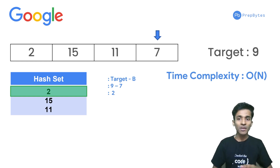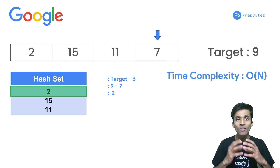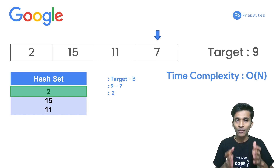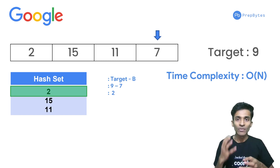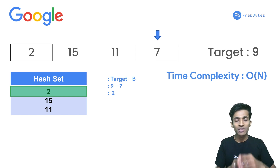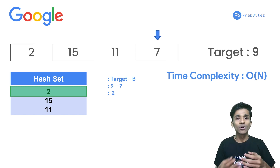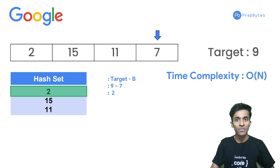For this hash set approach, the overall time complexity is O(n). In your technical round, this is exactly what you need to replicate: start with the naive approach, then optimize it and come up with logic that solves the problem in a much more effective way.